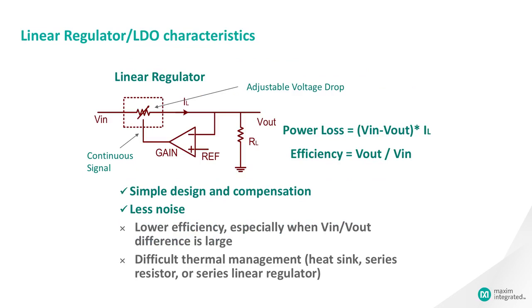In general, the advantages of linear regulators are simplicity, low noise, no EMI issues, and fast design. The major shortcomings of this type of regulator are low efficiency, especially when VOUT is much smaller than VIN, and difficult thermal management due to the heat generated by the power loss.